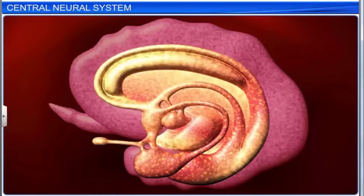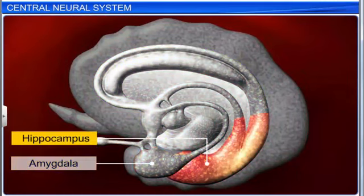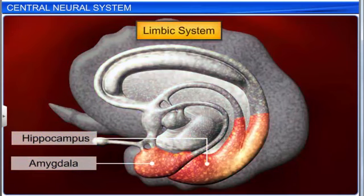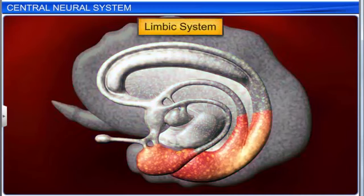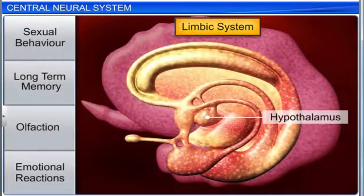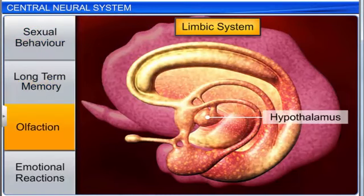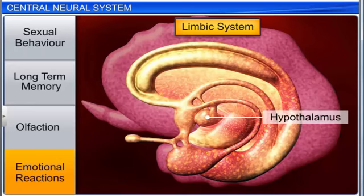The collection of structures within the forebrain, including the amygdala and hippocampus, is known as the limbic system. The limbic system, along with the hypothalamus, is responsible for the regulation of sexual behavior, long-term memory, olfaction, and the expression of emotional reactions such as excitement, pleasure, rage, fear, and motivation.